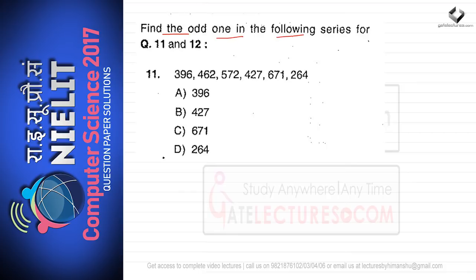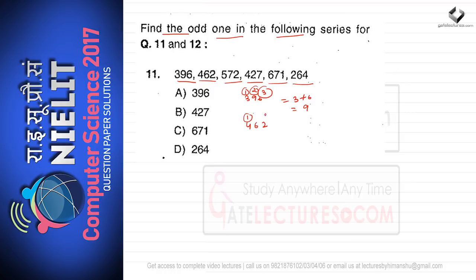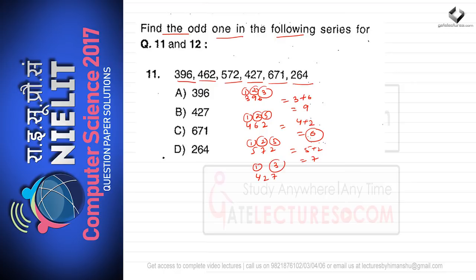Find the odd one in the following series. Question 11: the six terms are 396, 462, 572, 427, 671, and 264. In 396, the first and third digits sum to the middle digit: 3+6=9. In 462: 4+2=6. In 572: 5+2=7. But in 427, the first and third digits do not sum to the middle digit, so option B (427) is the odd one out.